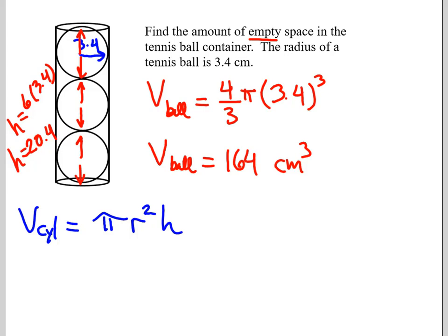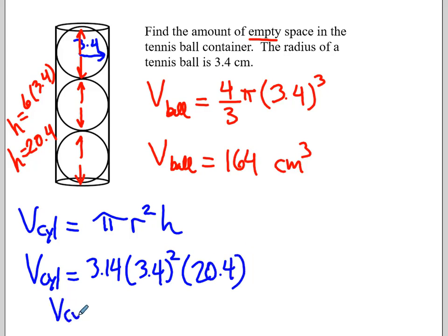When I go to solve this problem now, the volume of the cylinder is 3.14 times the radius 3.4 squared times 20.4. We'll let our calculator do all the heavy lifting. 740 cubic centimeters is the volume of the cylinder.